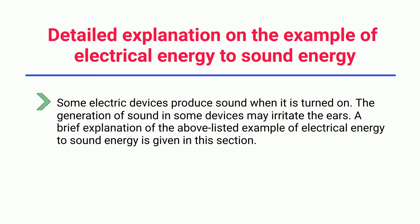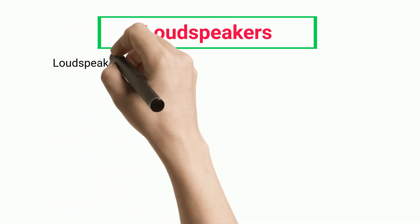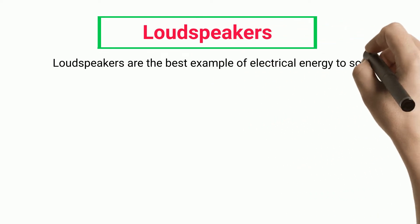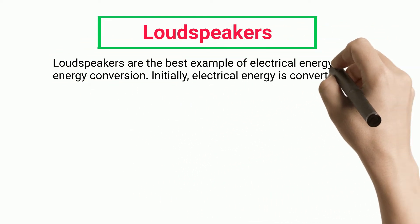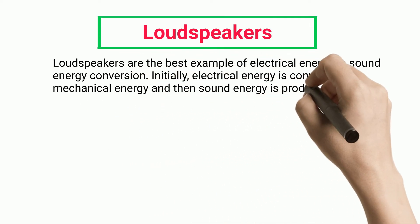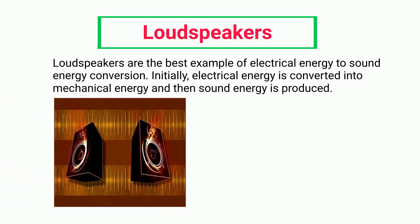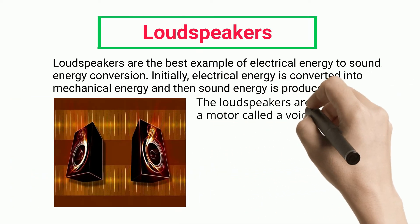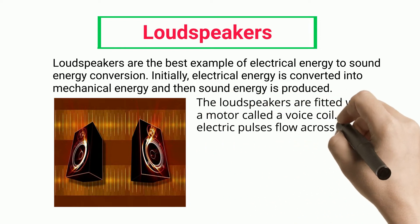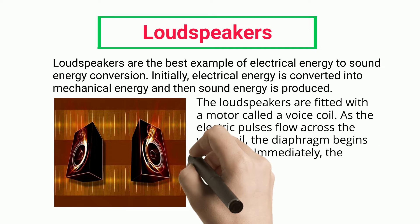Loudspeakers are the best example of electrical energy to sound energy conversion. Initially, electrical energy is converted into mechanical energy, and then sound energy is produced. The loudspeakers are fitted with a motor called a voice coil. As electric pulses flow across the voice coil, the diaphragm begins to vibrate.